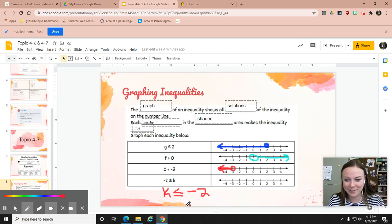K is less than or equal to negative 2. So circle on negative 2. I do have that equal to part, so I'm going to fill in that circle. And we're going to shade in all the values less than negative 2, so we're going to shade this way.